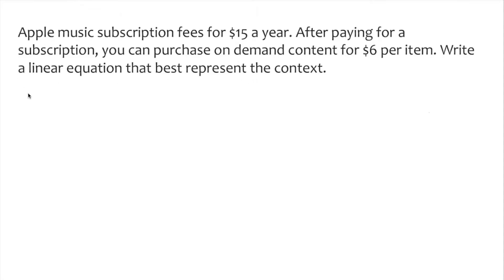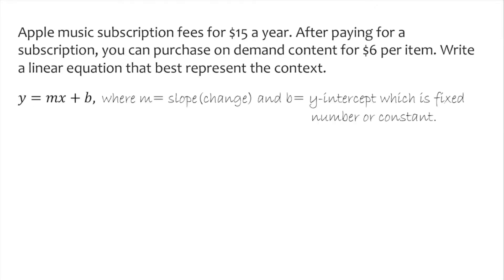The linear equation in basic form is y = mx + b, where m is the slope and b is the y-intercept. The slope is basically rise over run — the change — and b is the constant.